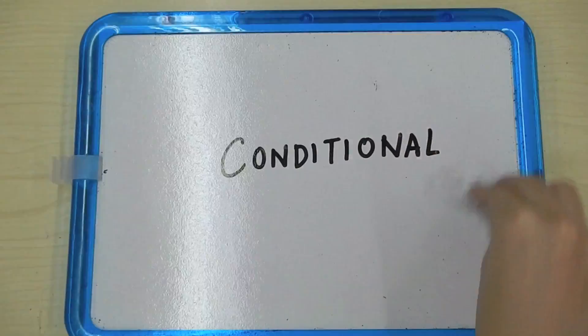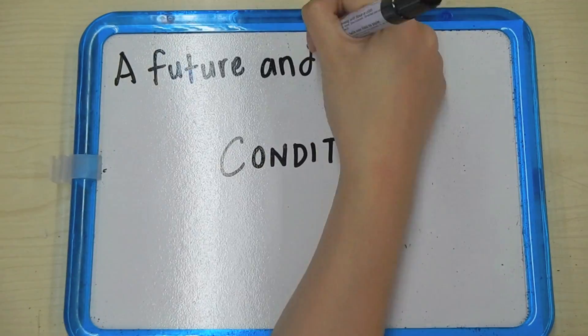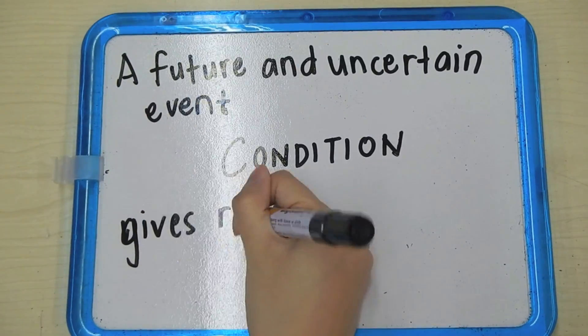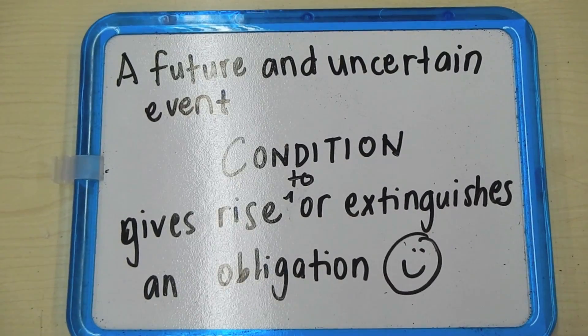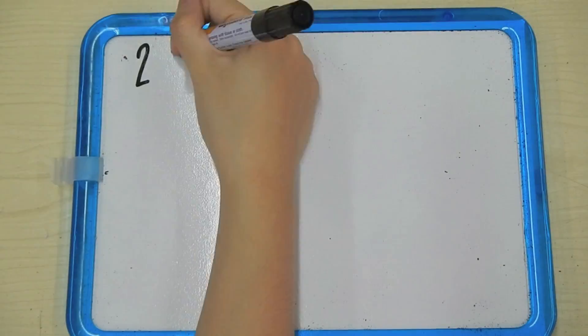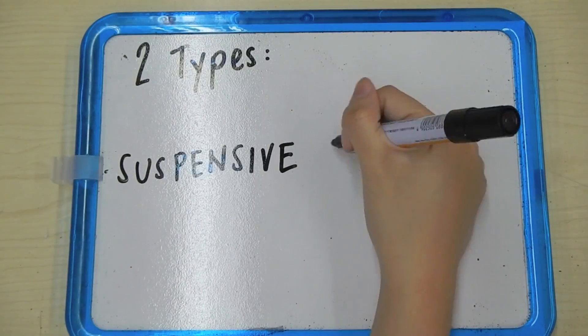Now let's describe the word condition. A condition is a future and uncertain event which, when fulfilled, gives rise to or extinguishes an obligation. There are two types of conditions: suspensive and resolutory.